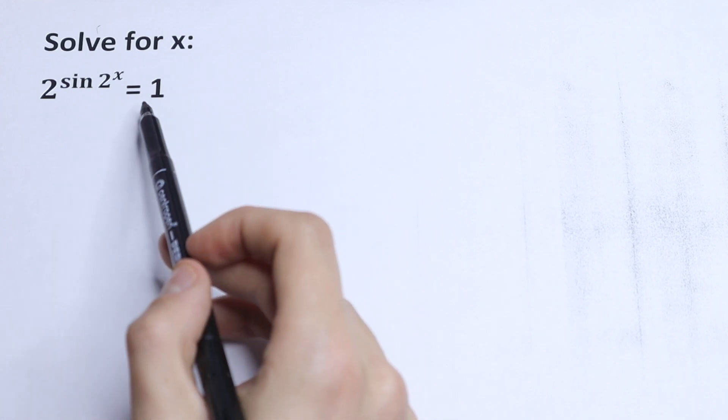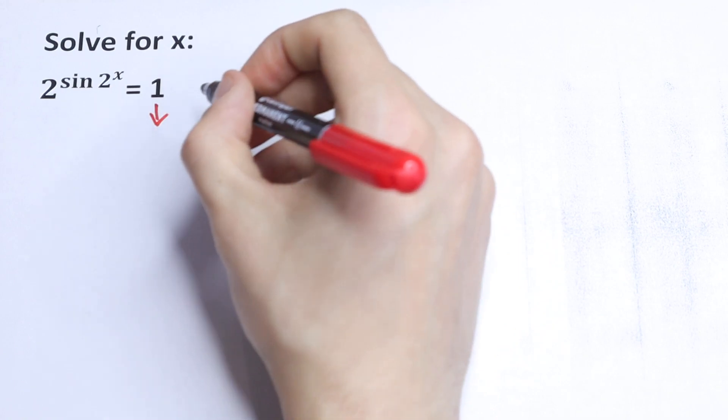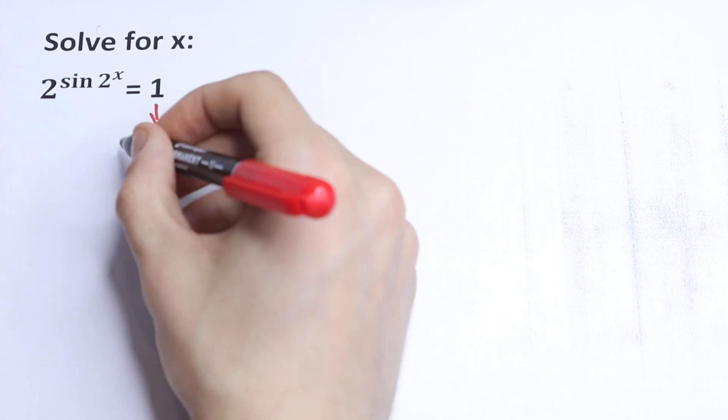First of all, we can express this one as 2 to the 0 power. And then we will work with our exponent. So this one can be written as 2 to the 0 power.